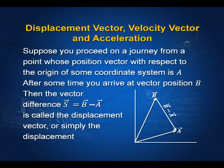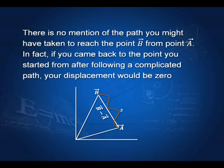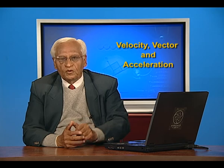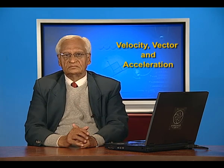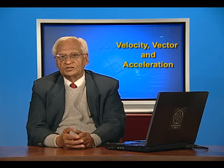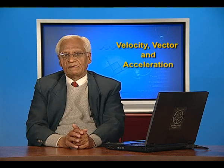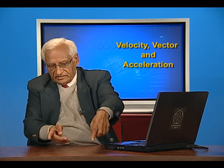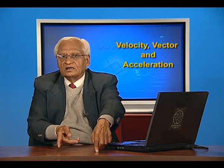The displacement vector, denoted by capital S, is equal to vector B minus vector A. It is called displacement vector, or simply displacement, but you must remember that it is a vector. Notice that we have not said anything about the path taken between position A and position B. In fact, if you started at point A, took all kinds of curves and paths, and came back to point A, your displacement would be zero, because the difference between the final vector and initial vector is zero. So the path does not matter — what matters is the final position and the initial position.